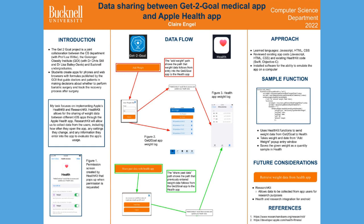This is an example of a function in the code for the Get to Goal app using the built-in HealthKit functions Save Weight and Save Quantity Sample. The purpose of this function is to send a new weight from Get to Goal to the Health app.